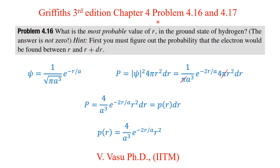Today we will solve problems 4.16 and 4.17 from Chapter 4 of Griffiths 3rd Edition Introduction to Quantum Mechanics. Problem 4.16 asks: what is the most probable value of R in the ground state of hydrogen? The answer is not zero. The ground state wave function of hydrogen is psi equals 1 over square root of pi times a³ times e to the power minus r over a.